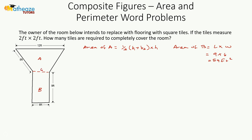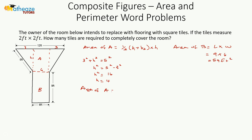For the trapezoid A, this part is 6, so each side is 3. To get the height we apply the Pythagorean theorem: 3 squared plus height squared equals 5 squared. Height squared equals 5 squared minus 3 squared, which is 16, so the height is 4. Area of A is one-half times (base one plus base two) times height: one-half times (12 plus 6) times 4 equals one-half times 18 times 4, which is 36 square feet.